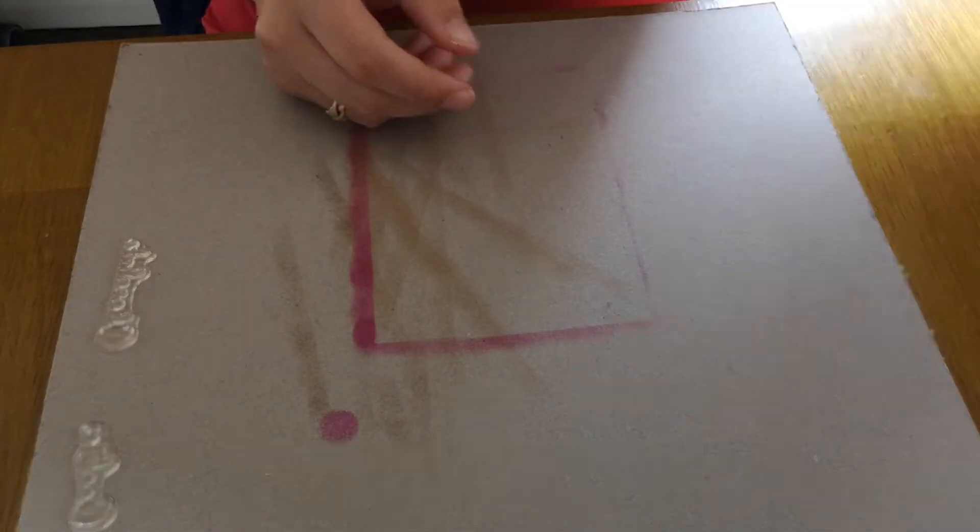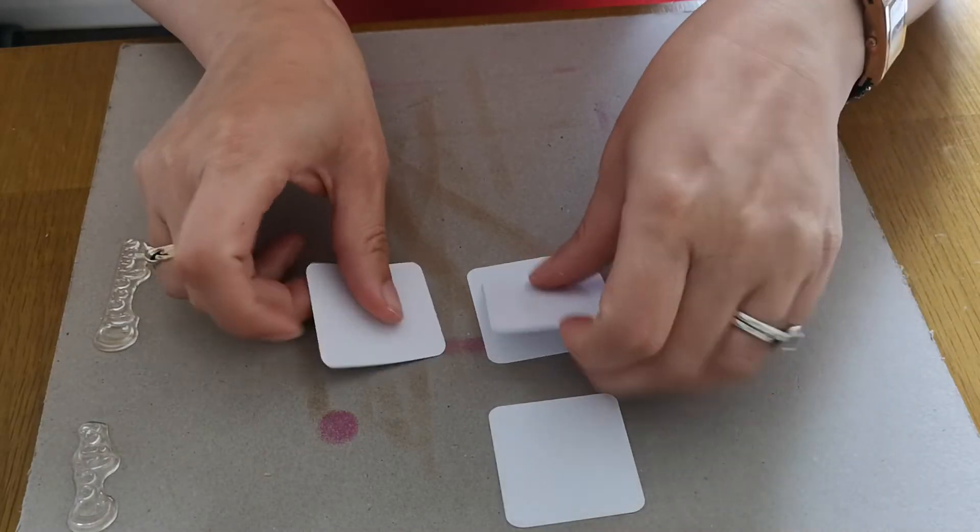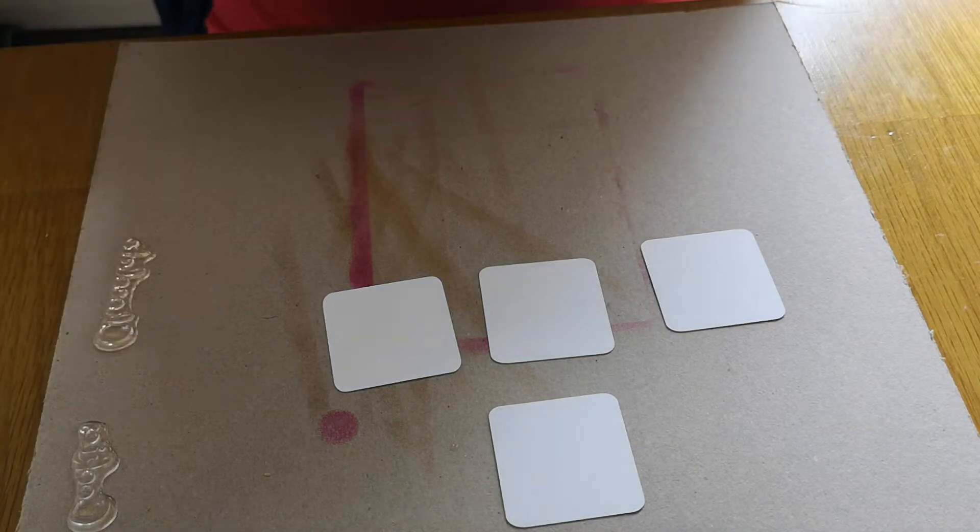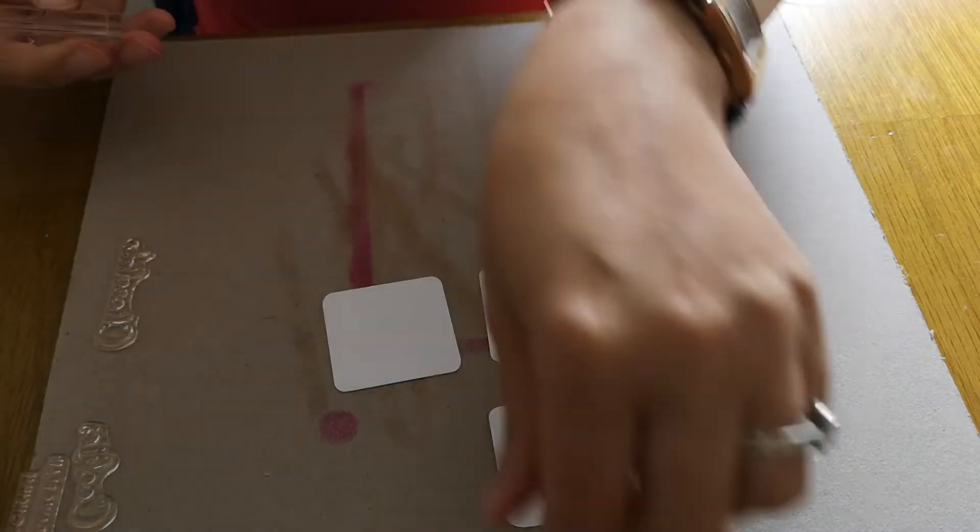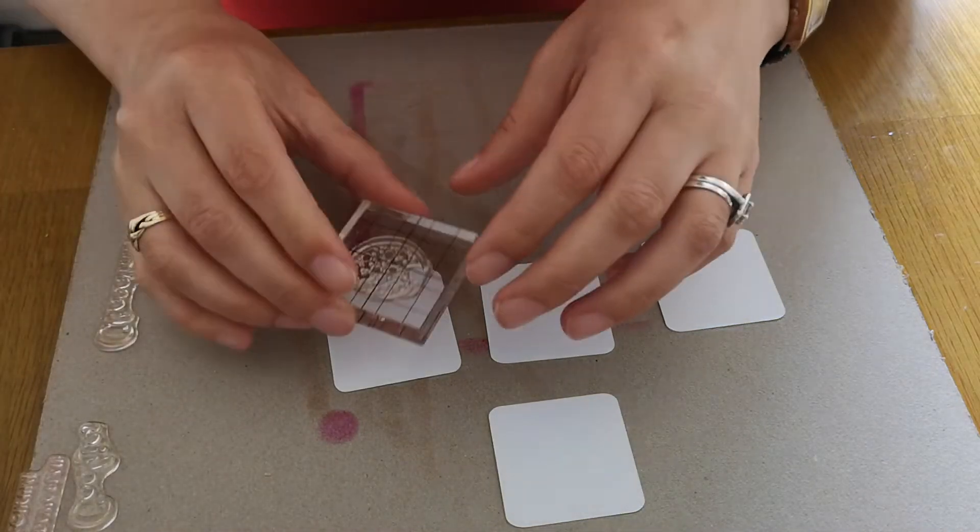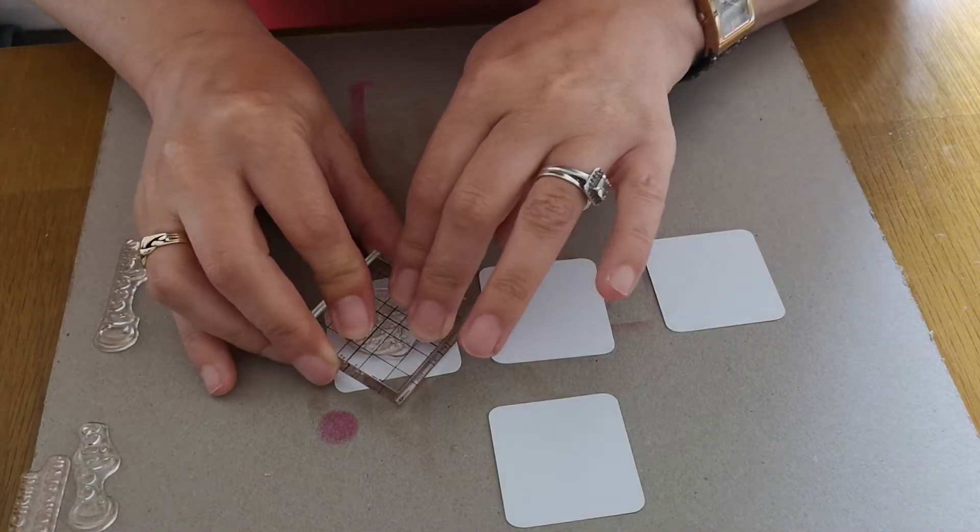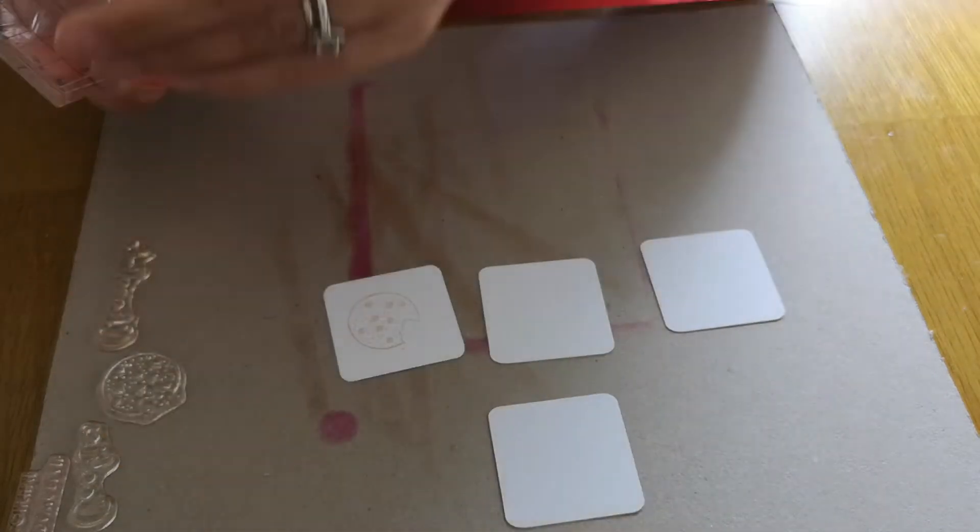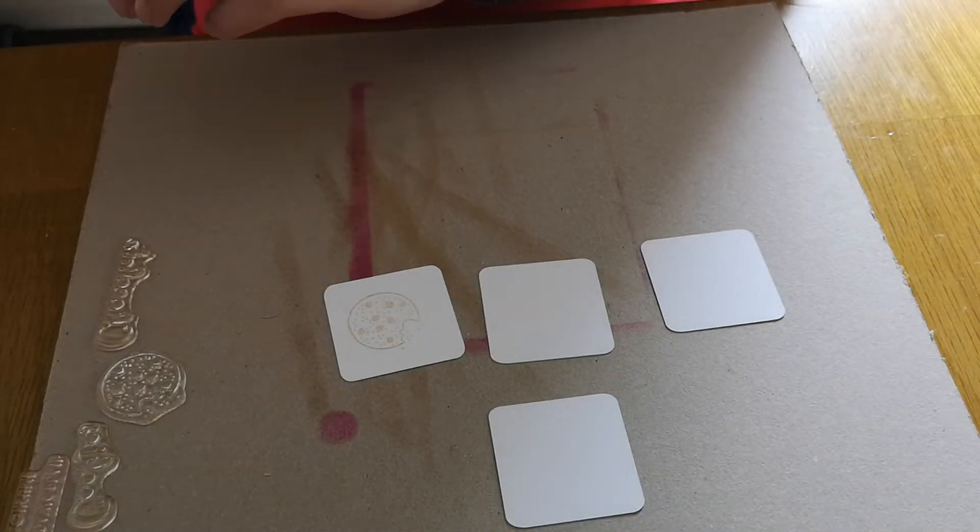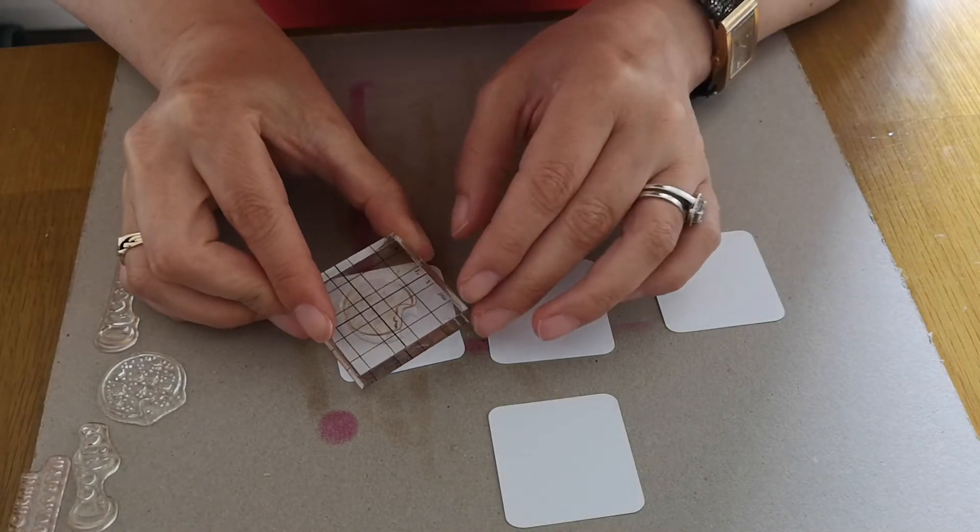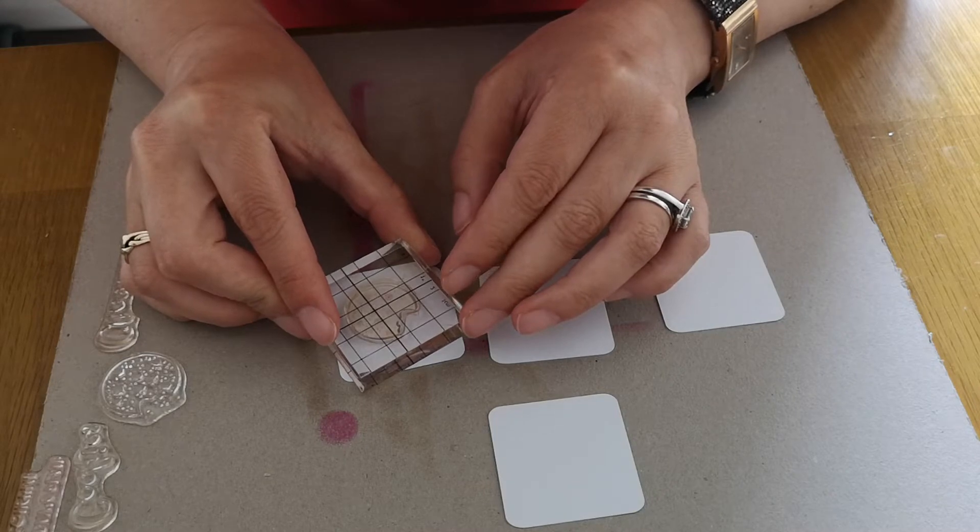Line that up and press it down. Next we are going to stamp our images for the waterfall part of this card. So I'm going to start with the cookie because believe it or not the cookie gives me the most trouble of all of these stamps in lining them up. I don't know why, it is most definitely something that I am doing.